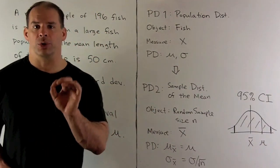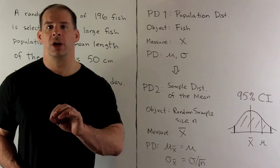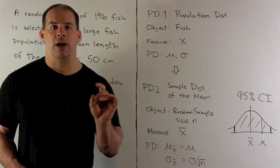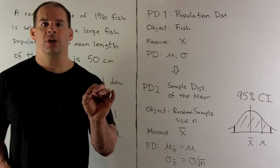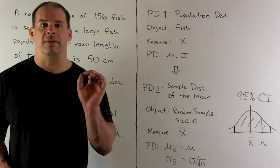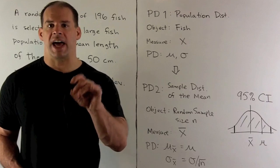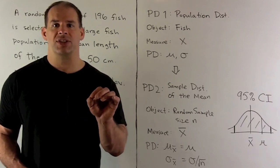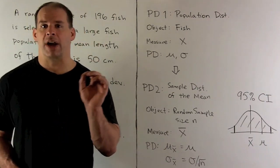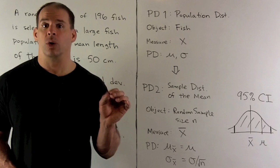With that probability distribution, we can create another one. Instead of drawing one fish, we're going to randomly select n fish — that gives us a sample of size n. We can take the average, or mean, of the lengths. The random variable here is going to be x-bar, the mean of a random sample of size n. Attached to this is the sampling distribution of the mean, or sample mean.